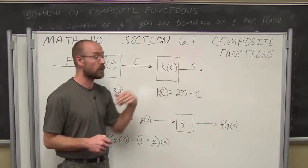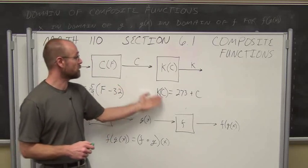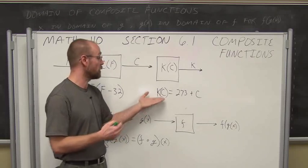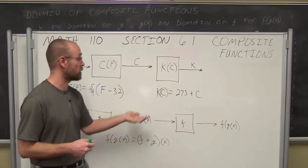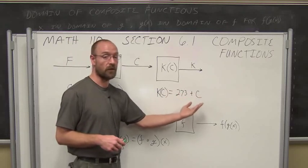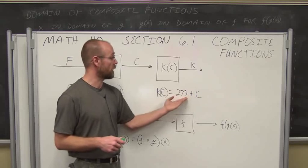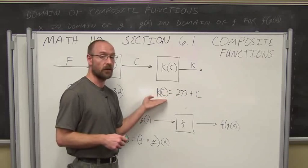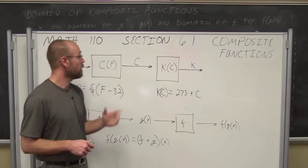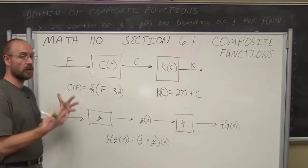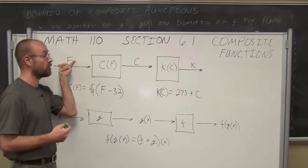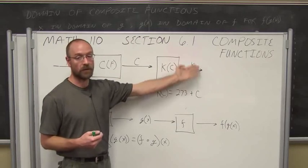The SI temperature scale is Celsius or Kelvin — the absolute temperature scale. There is a function that converts Celsius to Kelvin: K = 273 + C. If I know the temperature in degrees Celsius, I can add 273 to get the Kelvin value. So if we think about it, essentially a composite function answers the question: what if I want to start with an input of Fahrenheit and get an output in Kelvin?